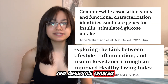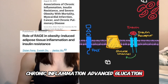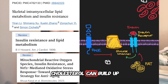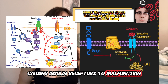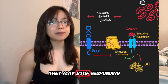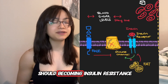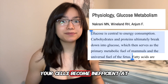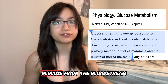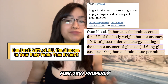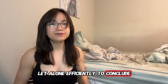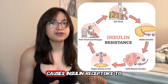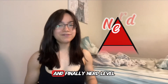Due to genetics and lifestyle choices, chronic inflammation, advanced glycation end products, reactive oxygen species, and excess fat or cholesterol can build up, causing insulin receptors to malfunction. When these receptors malfunction, they may stop responding to insulin in the way they should, becoming insulin resistant. Without proper sensitivity to insulin, your cells become inefficient at utilizing their main source of energy — glucose from the bloodstream — and they struggle to function properly, let alone efficiently. In summary, the buildup of excess fat and damaging waste in the body causes insulin receptors to become insulin resistant.